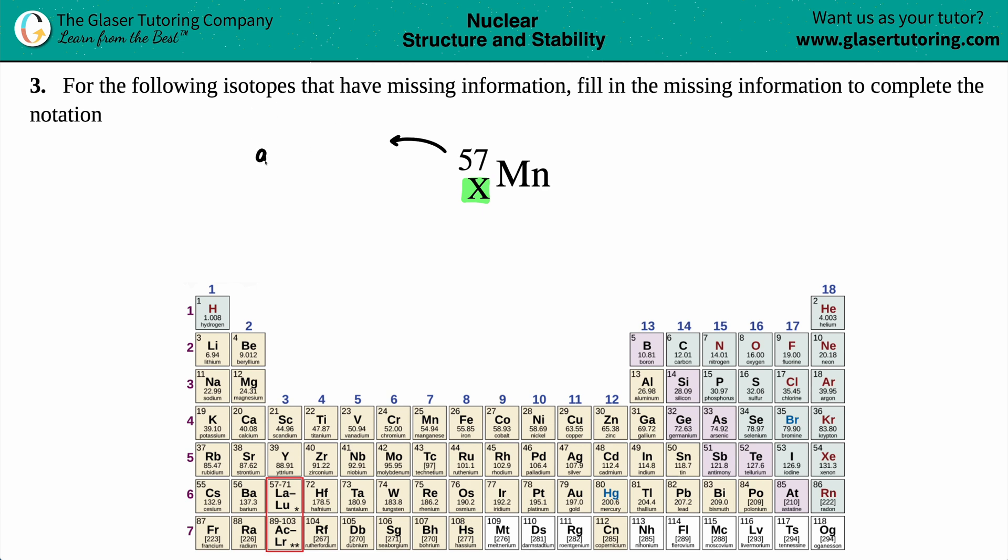So it's the mass number if you want to say that, and then the bottom number is always the atomic number. Always know that bigger numbers go on top, smaller numbers go on the bottom. So the atomic number should always be smaller than your atomic mass.